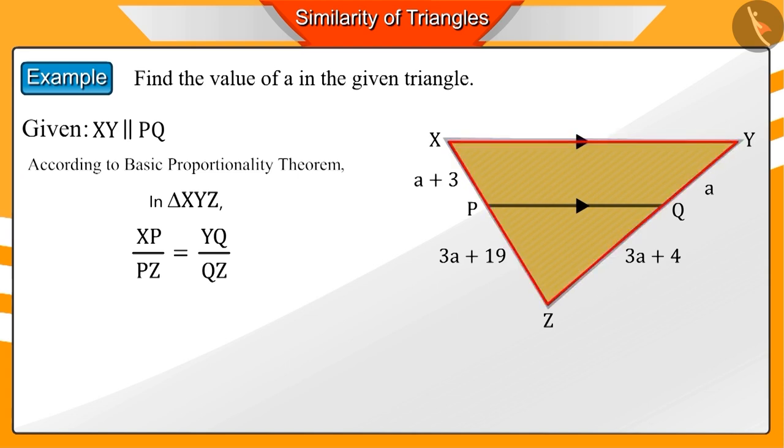In the figure, we can see that XP is equal to A plus 3, PZ is equal to 3A plus 19, YQ is equal to A, and QZ is equal to 3A plus 4.